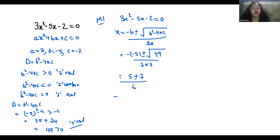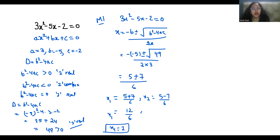So it becomes 5 plus or minus 7, divided by 6. The first root is 5 plus 7 over 6, which equals 12 over 6, giving x₁ equals 2. And the second root is 5 minus 7 over 6, which is minus 2 over 6, giving x₂ equals minus 1 over 3.